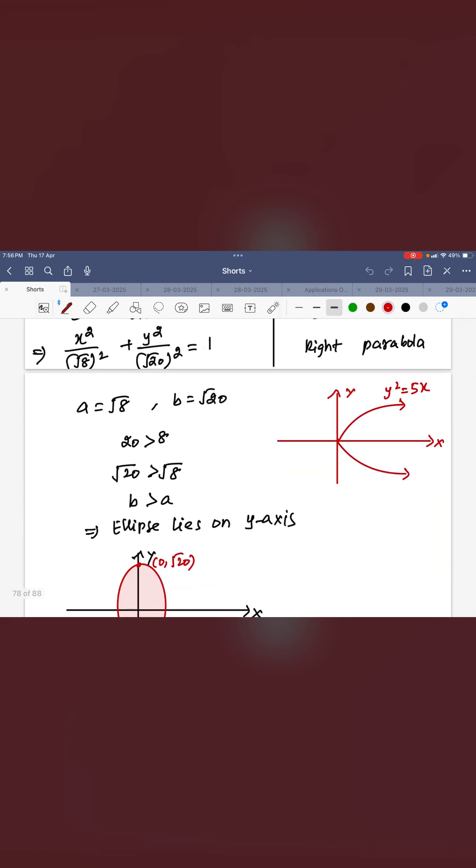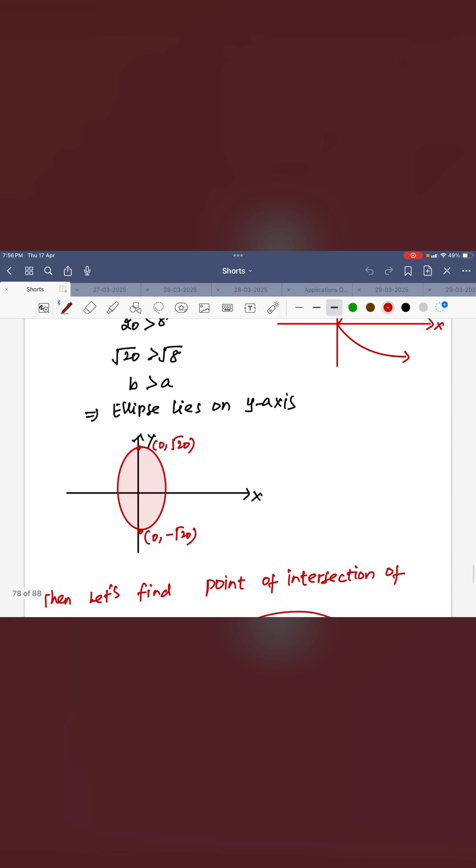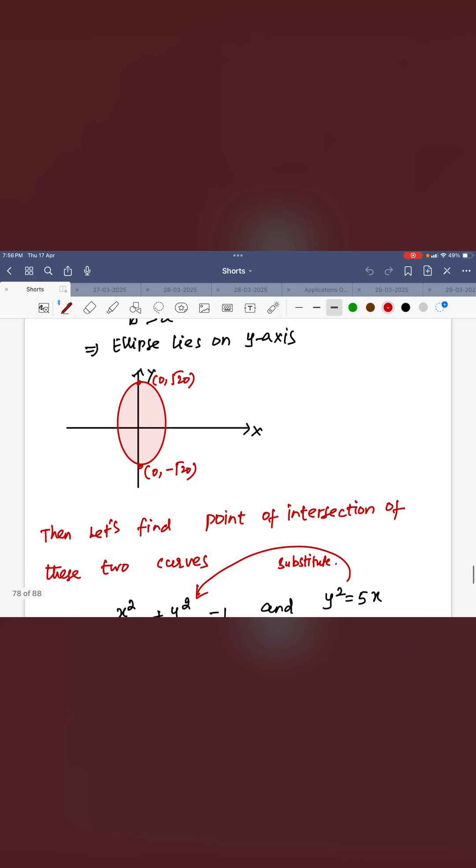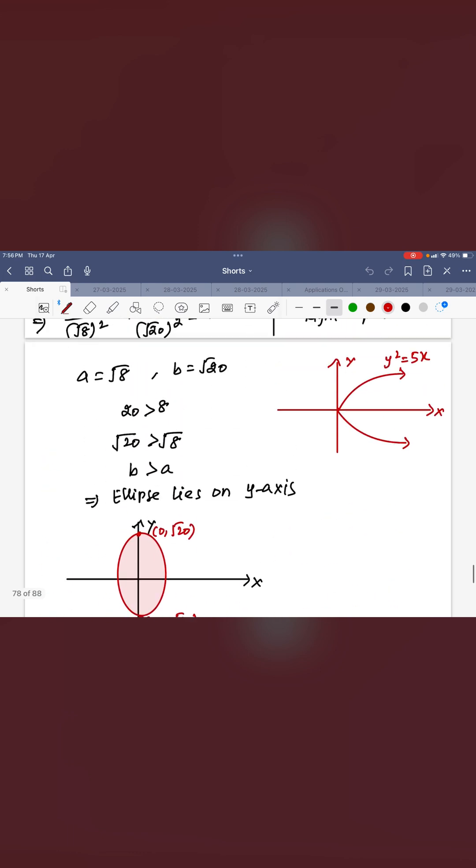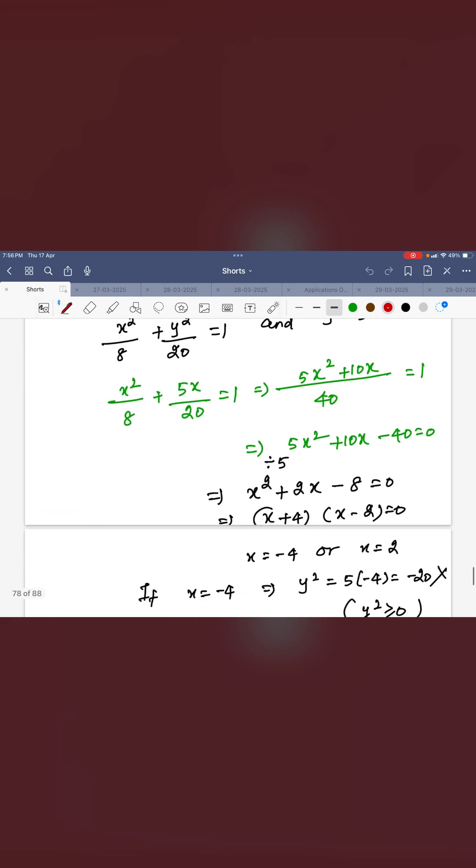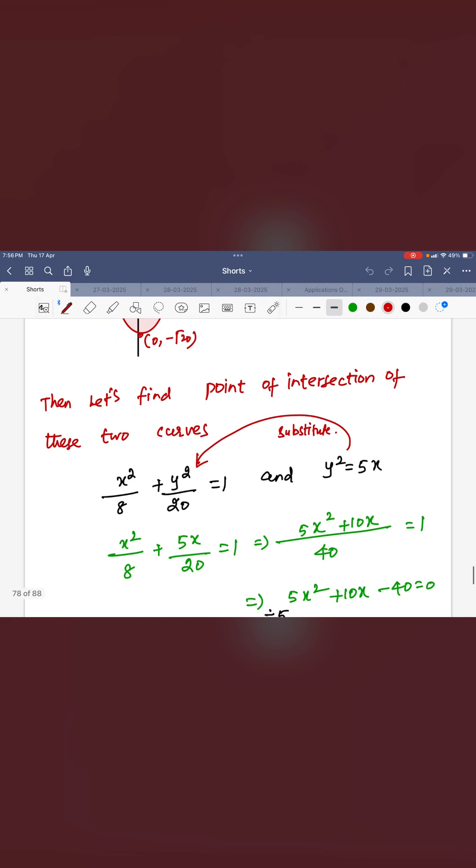Here b is greater than a, therefore it is along the y-axis. It will lie. The ellipse will lie on the y-axis and then you can see the parabola is rightward parabola. So now you have to find where these two graphs are intersecting. You can find the common regions.